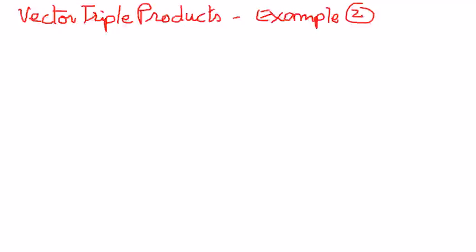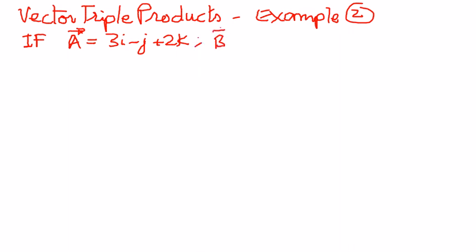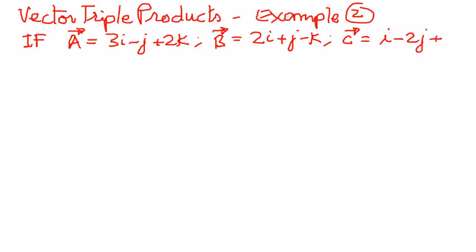We have vector a given as 3i minus j plus 2k, vector b given as 2i plus j minus k, and vector c given as i minus 2j plus 2k.